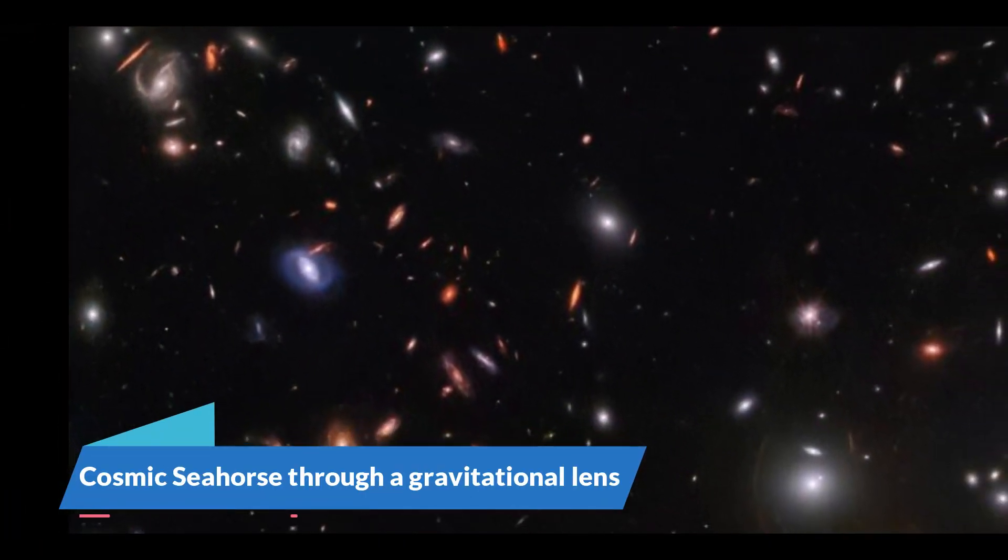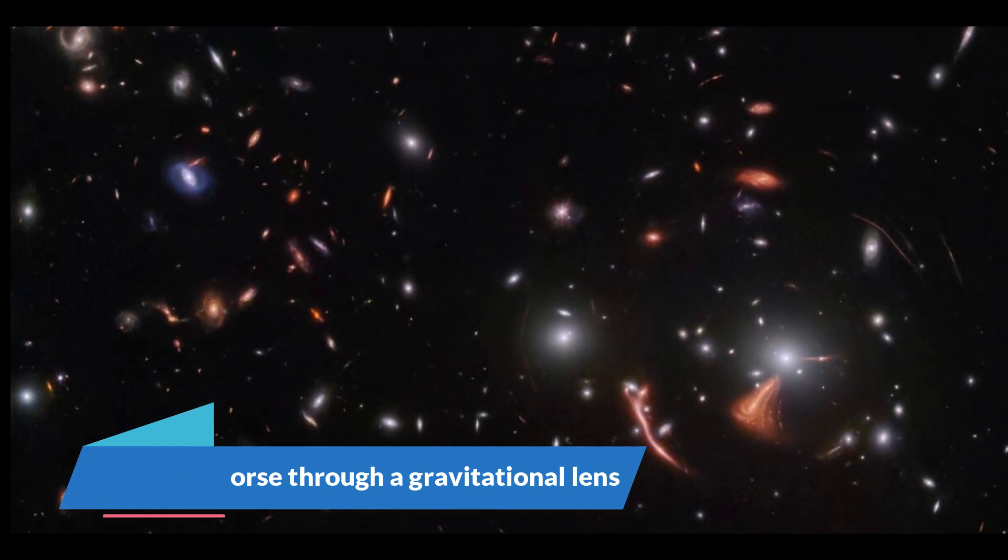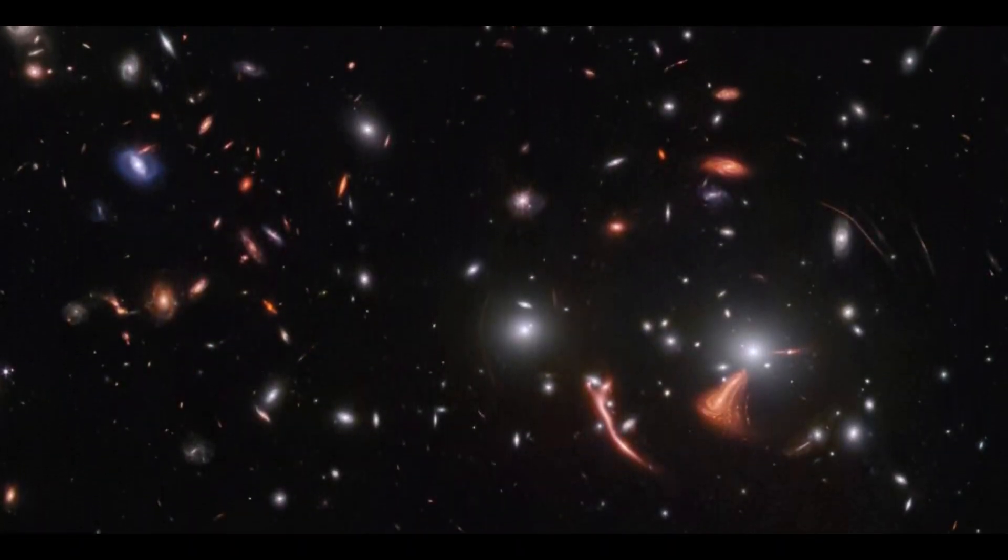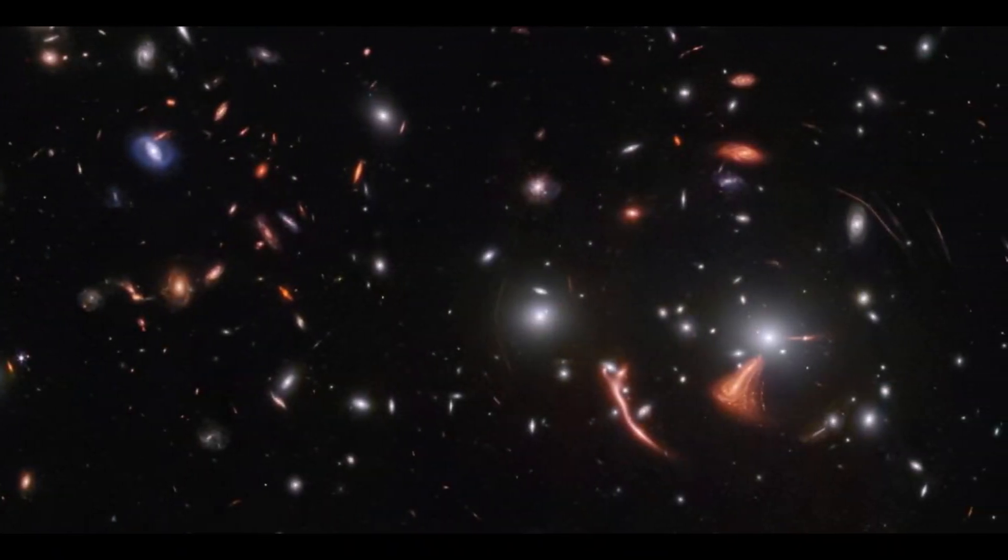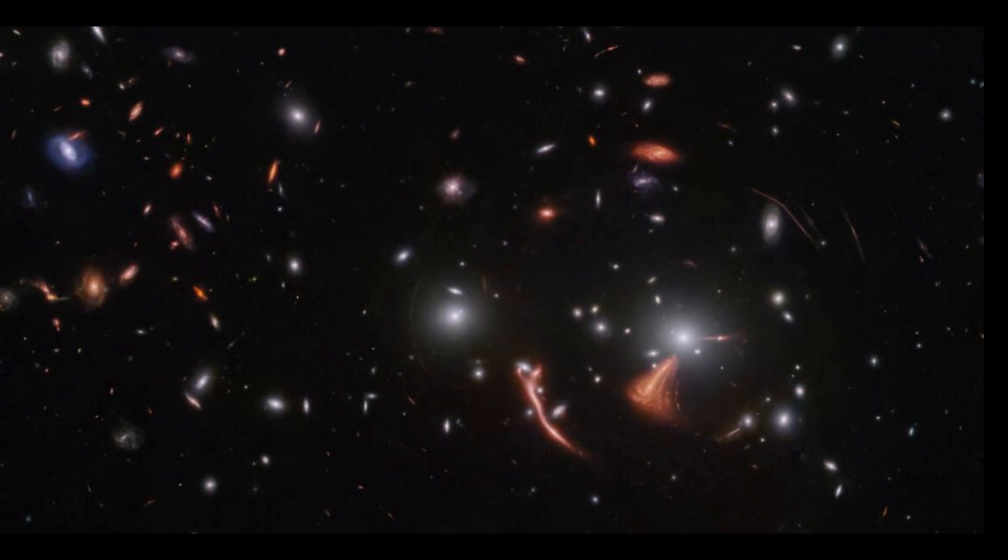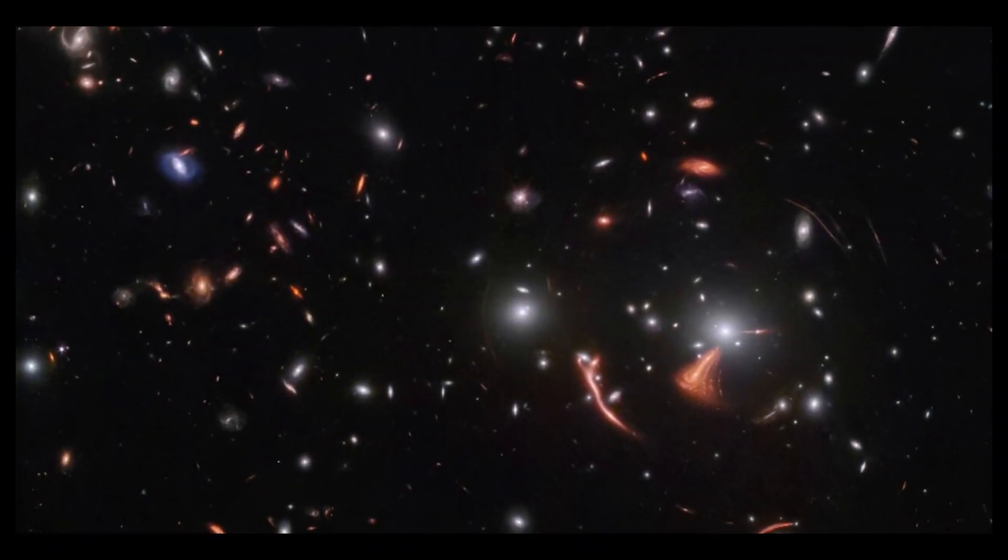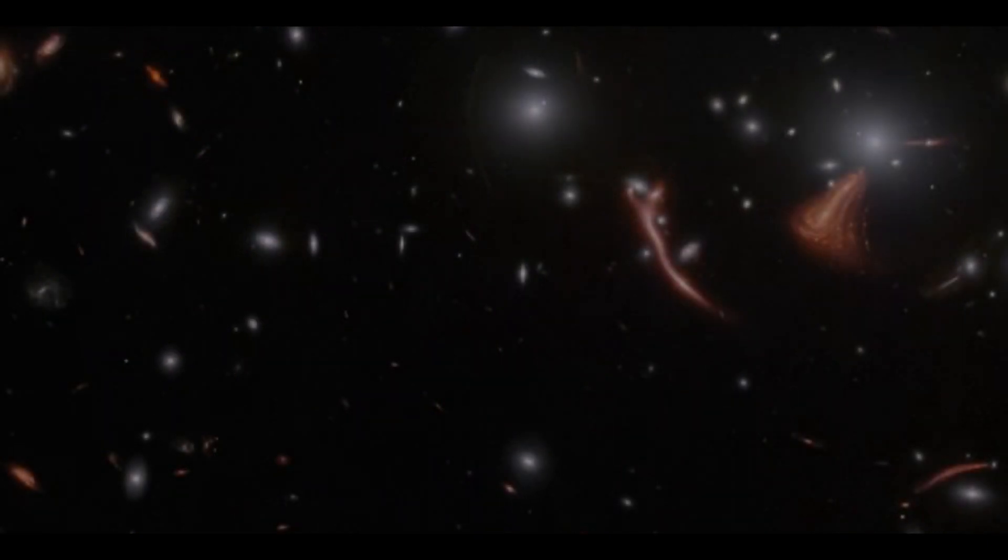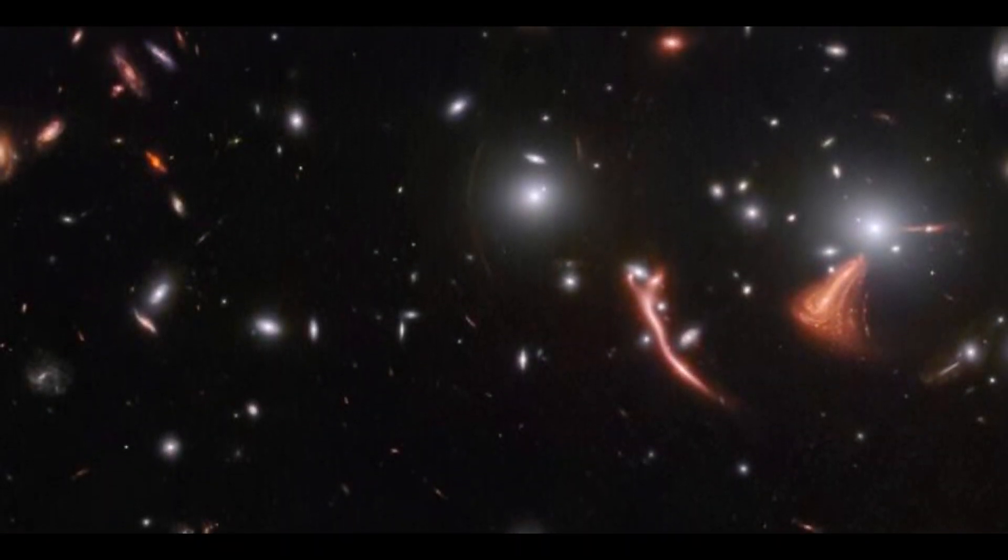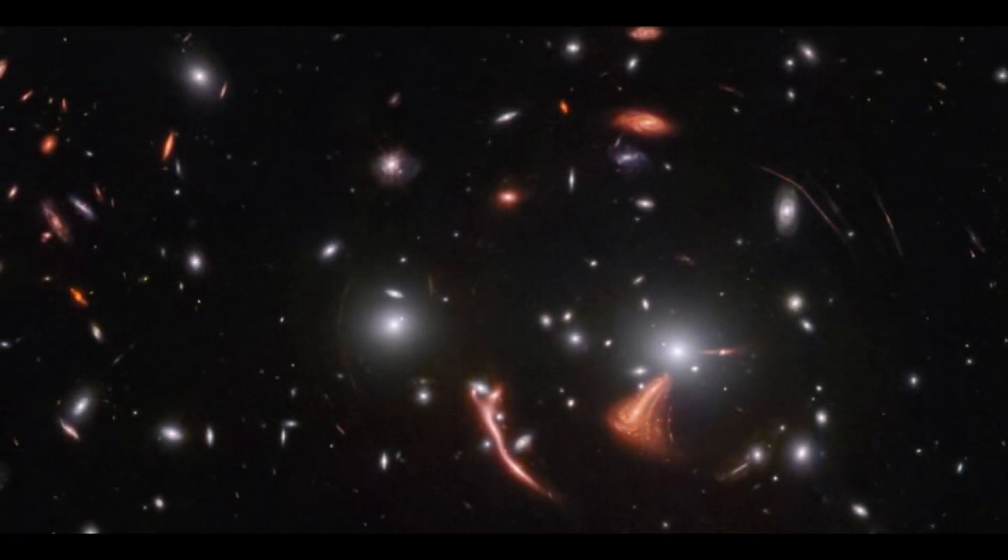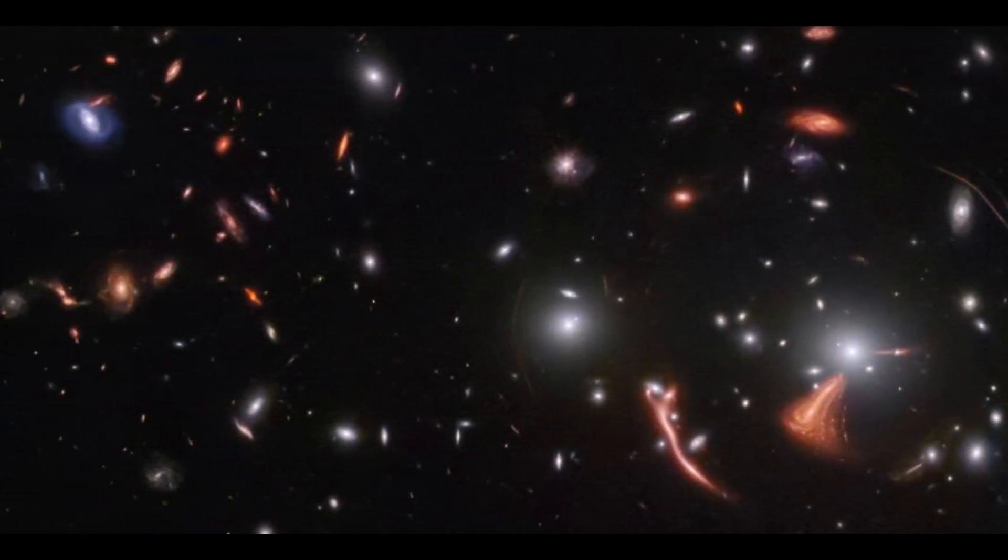Number two, cosmic seahorse through a gravitational lens. While the James Webb Space Telescope is the most powerful off-Earth observatory ever built, it has limitations in terms of how far it can observe. As a breathtaking new image demonstrates, the JWST's already razor-sharp vision is boosted by a phenomenon known as gravitational lensing. The cosmic seahorse galaxy is viewed through a gravitational lens in this image from Webb's near-infrared NIRCAM instrument.